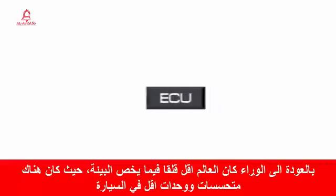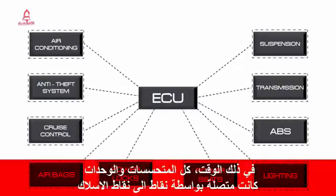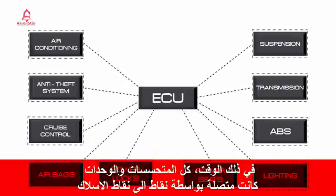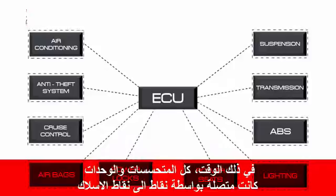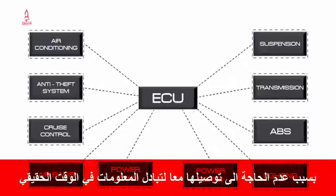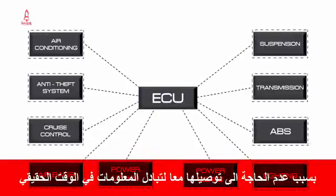Back in the day when the world was less concerned about the environment, there were fewer sensors and modules in the car. At that time, all sensors and modules were connected by point-to-point wires because they didn't need to be linked together for exchanging real-time information.